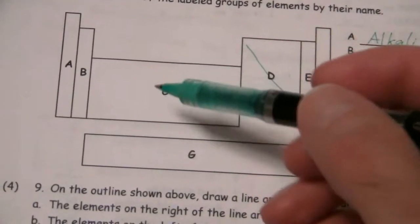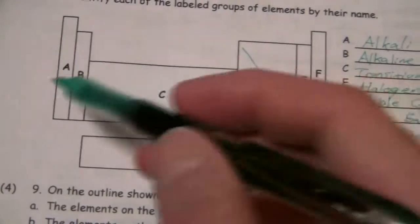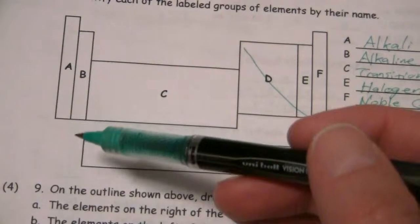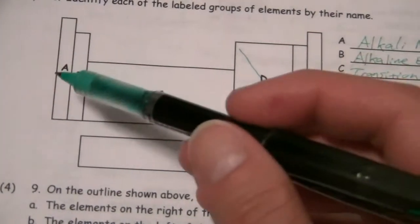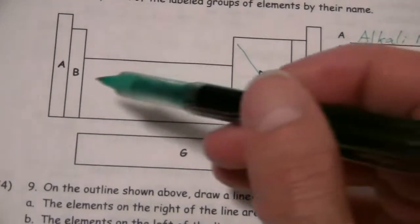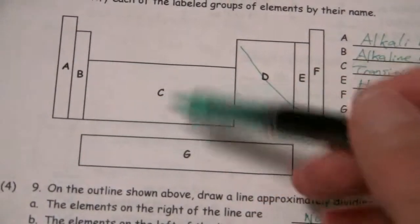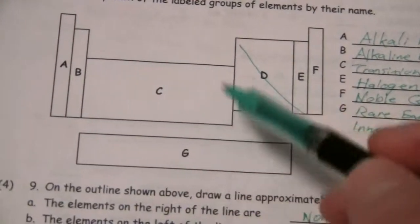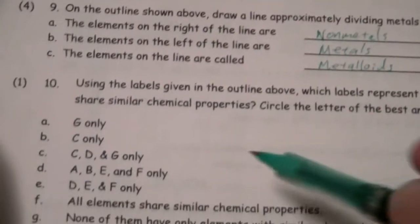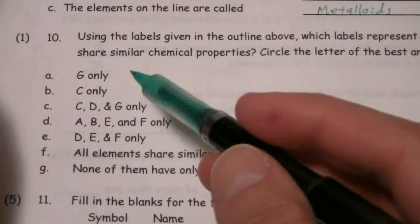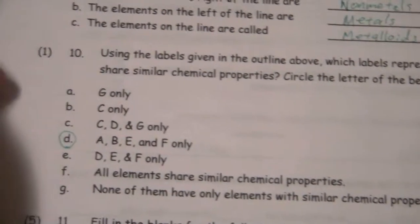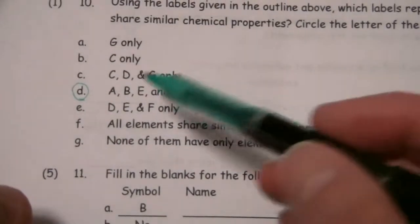And, in fact, they're grouped vertically. Similar properties, elements with similar properties will fall on top of each other, not side to side. So, that means what we're looking for are those groups that have only one column. So, that would include A, B, E, and F. The ones that have groups, or rather have elements from multiple columns, multiple groups or families, as they're called, those would not all have similar chemical properties. So, C, D, and G would not all have similar chemical properties. But, A, B, E, and F, that is the one that they all do have similar properties within each group.